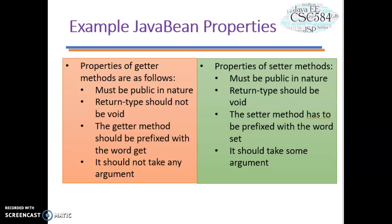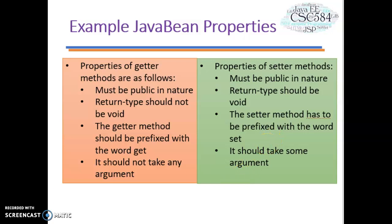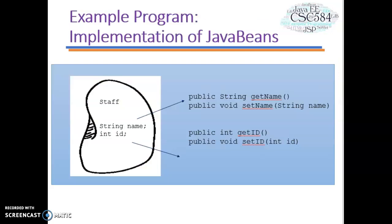For getter method properties: the method must be public, the return type should not be void, the getter method should be prefixed with the word 'get', and it should not take any arguments. For setter method properties: the method must be public, the return type should be void, the setter method must be prefixed with the word 'set', and it should take some argument.